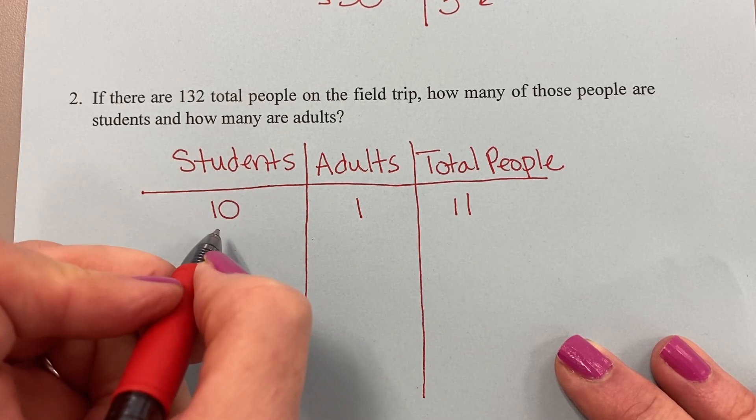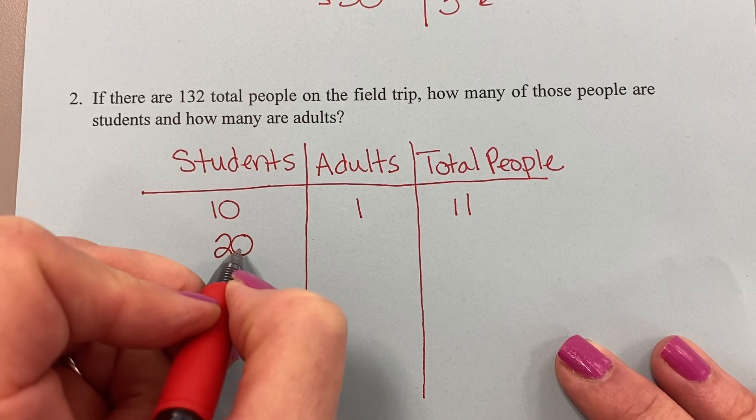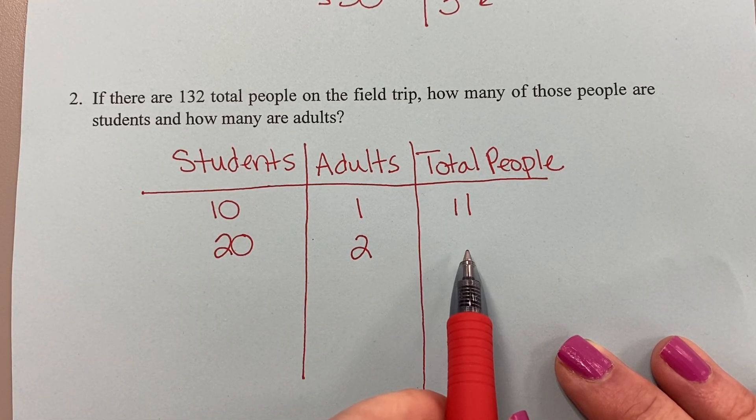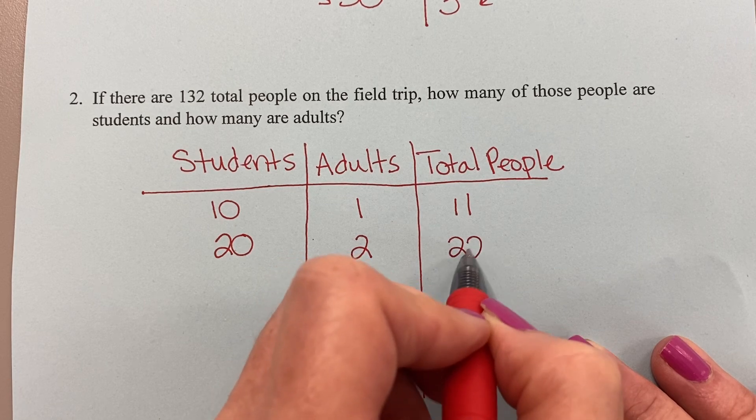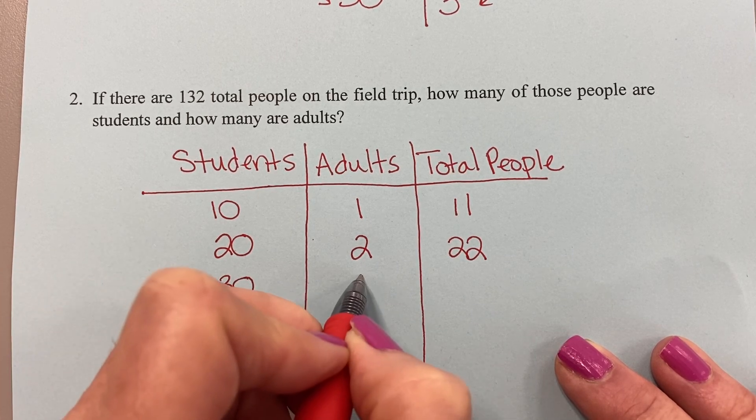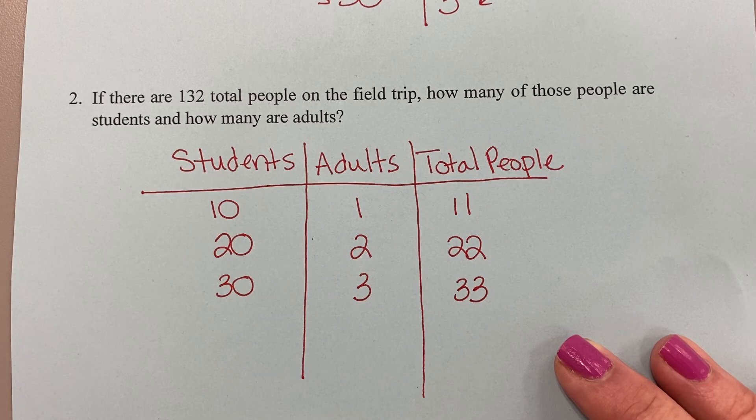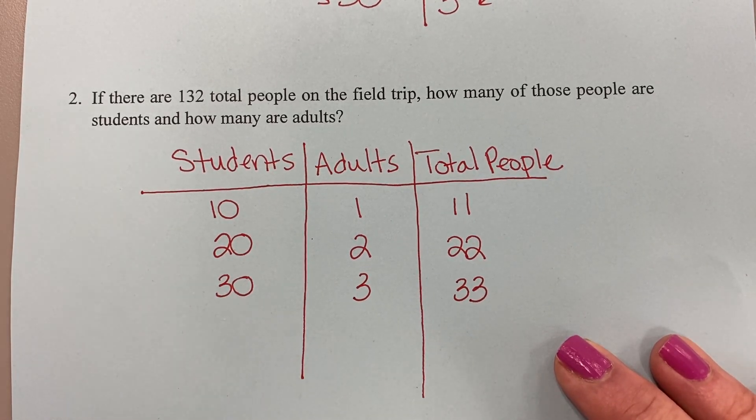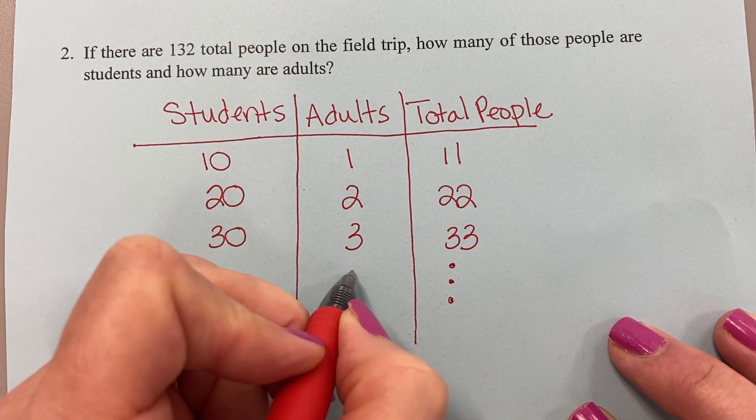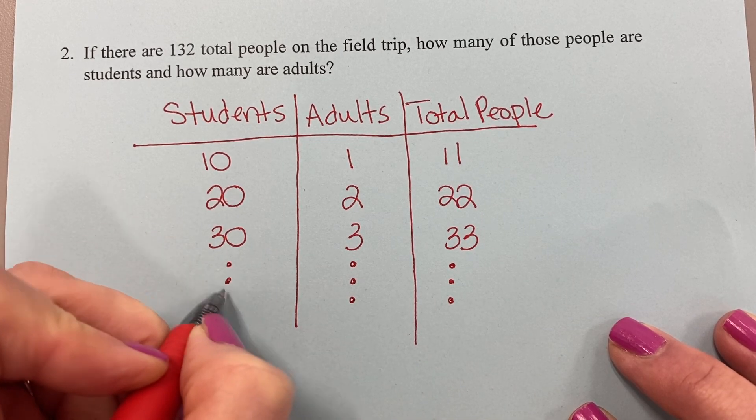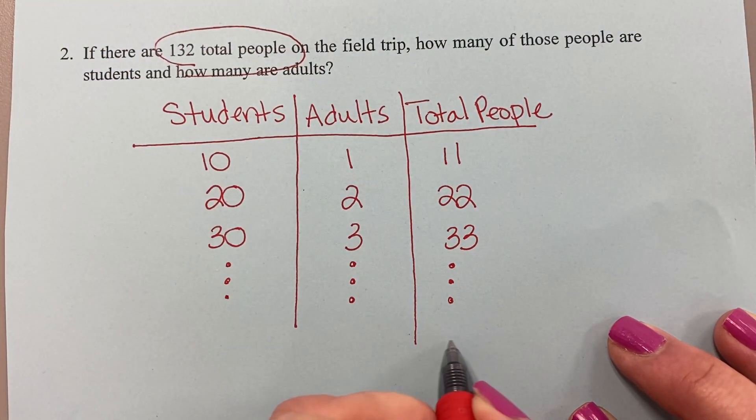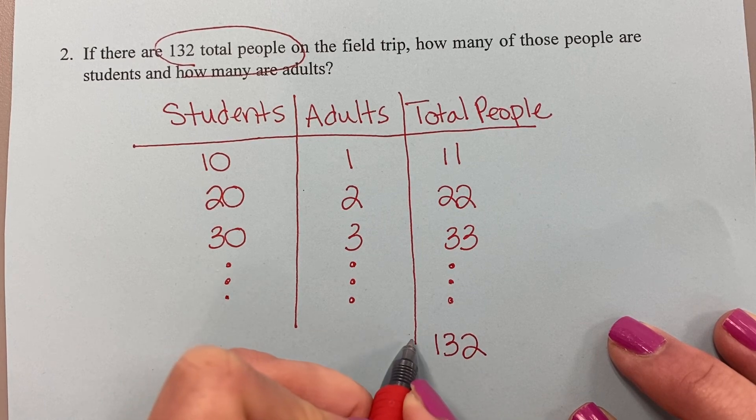I know that if I take 10 students and one adult, how many total people would be on the trip? Well, I hope you're thinking 10 plus 1 is 11. So that's not the answer because it says there are 132 total people on the trip, not 11. Let's grow it up. Let's say we multiply everything by 2 here. What if I took 20 students? That would mean 2 adults. Now how many total people are there? 22. And then if I grow this up to 30 students and 3 adults, that would be 33 people on the trip. I'm looking for 132 total people.